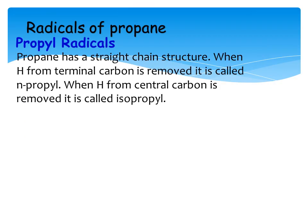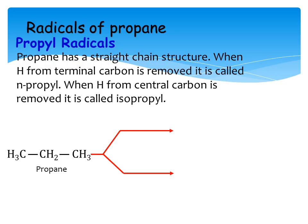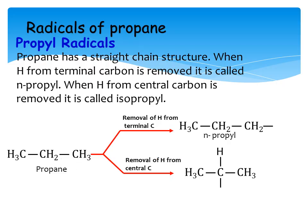Now we look at how we derive the radicals of propane. Propane has a straight structure with two different possibilities: CH3 groups on both sides are the terminal carbons, each having three hydrogens, while the central carbon has just two hydrogens. So there are chances of two radicals. When hydrogen is removed from a terminal carbon, it forms n-propyl. When hydrogen is removed from the central carbon, it is called isopropyl.